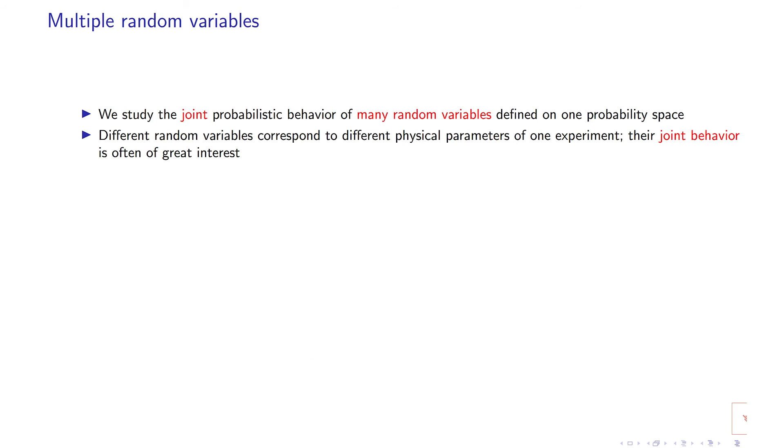Different random variables correspond to different physical parameters of one experiment. What we are often interested in is the joint behavior of, let's say in the previous example,